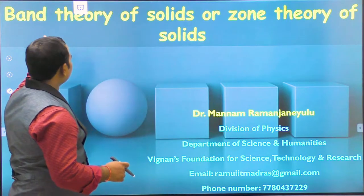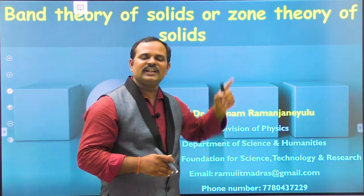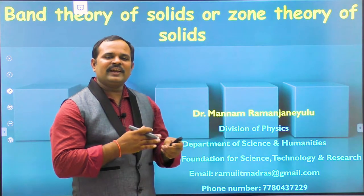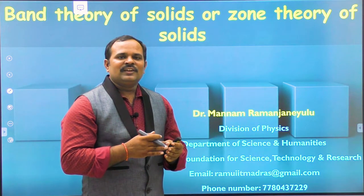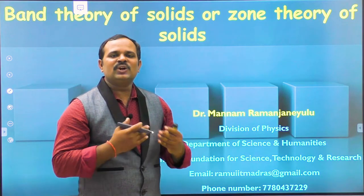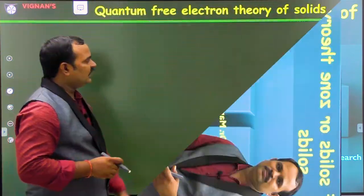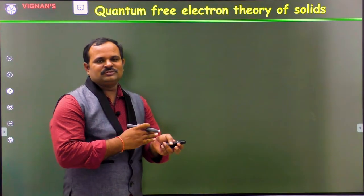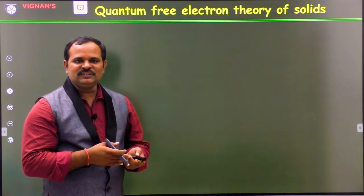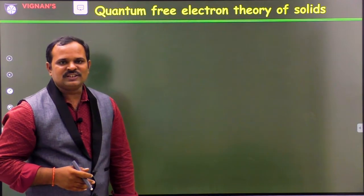So in this class, we will explain about the band theory of solids or zone theory of solids and explain the classification of solids based on band theory of solids. Let us start by looking at a few assumptions and failures of the quantum free electron theory, then we will go into the band theory of solids.